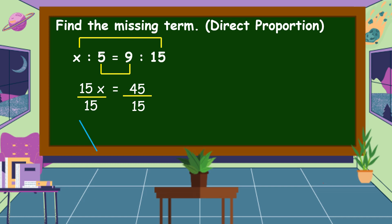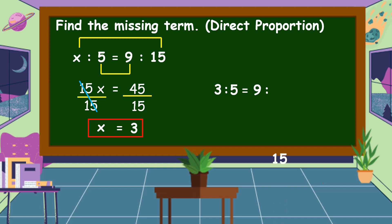15x divided by 15 is equal to x, and 45 divided by 15 is equal to 3. Therefore, the value of our missing term is 3. To check whether our answer is correct, we substitute it back into the original equation.